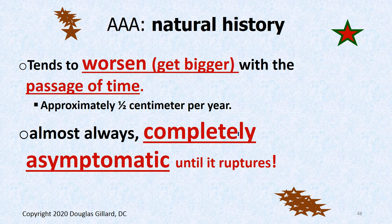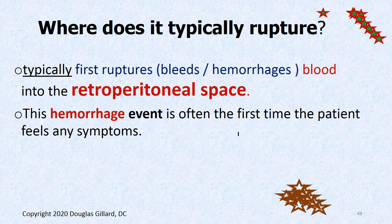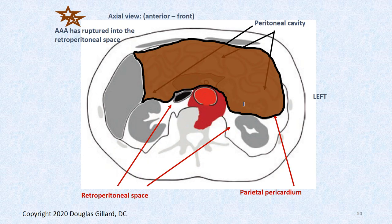The natural history of these things: they tend to get bigger with the passage of time — that's why you have to monitor them. On average it's about half a centimeter per year. They're almost always completely asymptomatic. If they start to get symptomatic, you're usually in big trouble. Where does it typically rupture? It typically ruptures posteriorly into the retroperitoneal space — and that's actually a good thing.